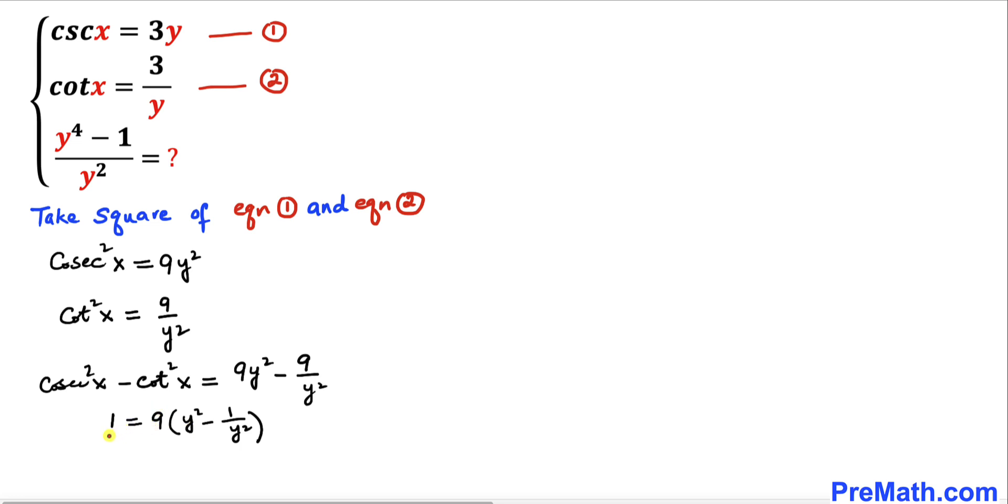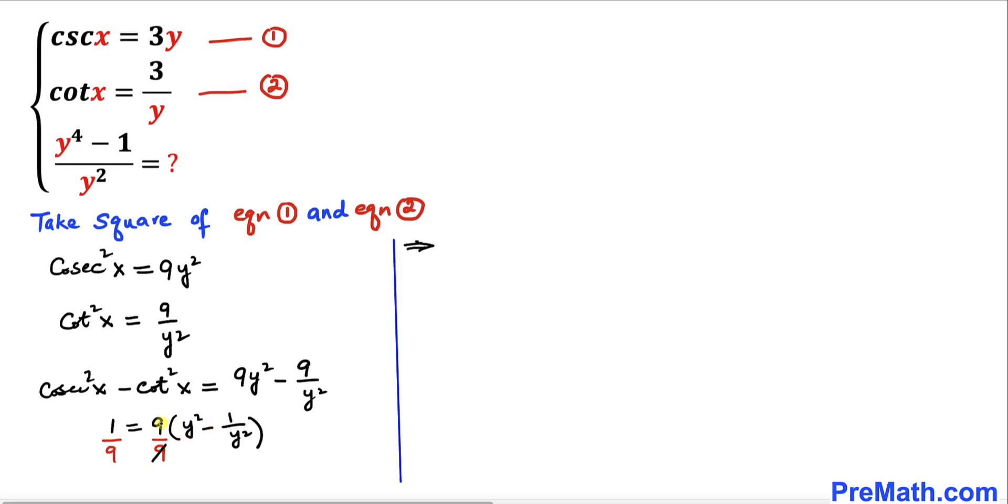Now let's divide both sides by 9. The 9 and 9 cancel out, so we ended up with y squared minus 1 divided by y squared equals 1 divided by 9.